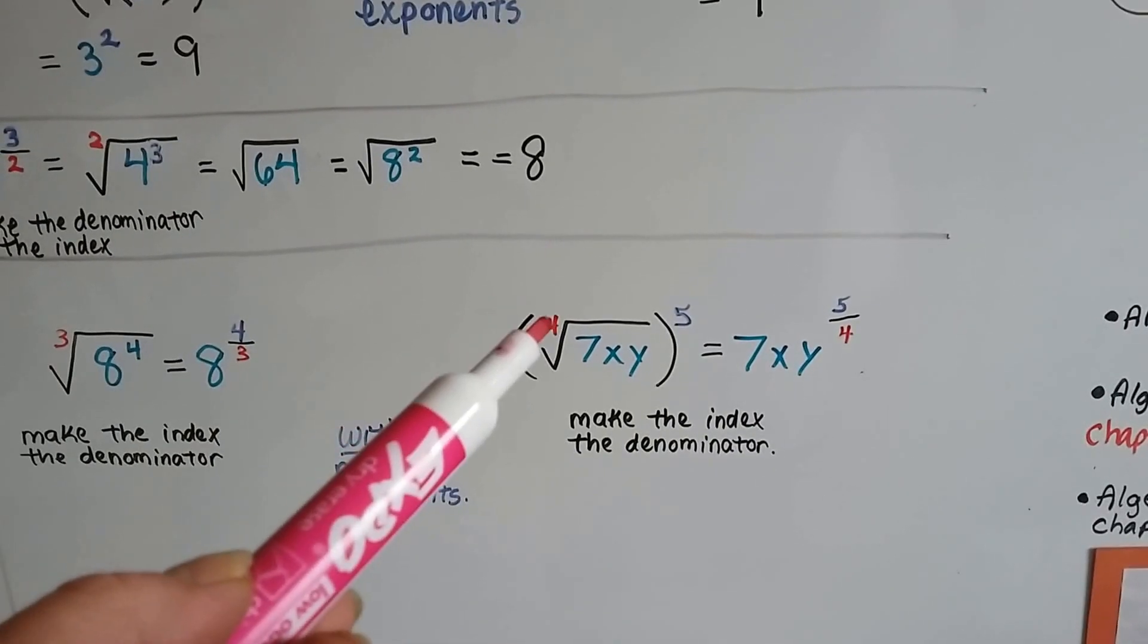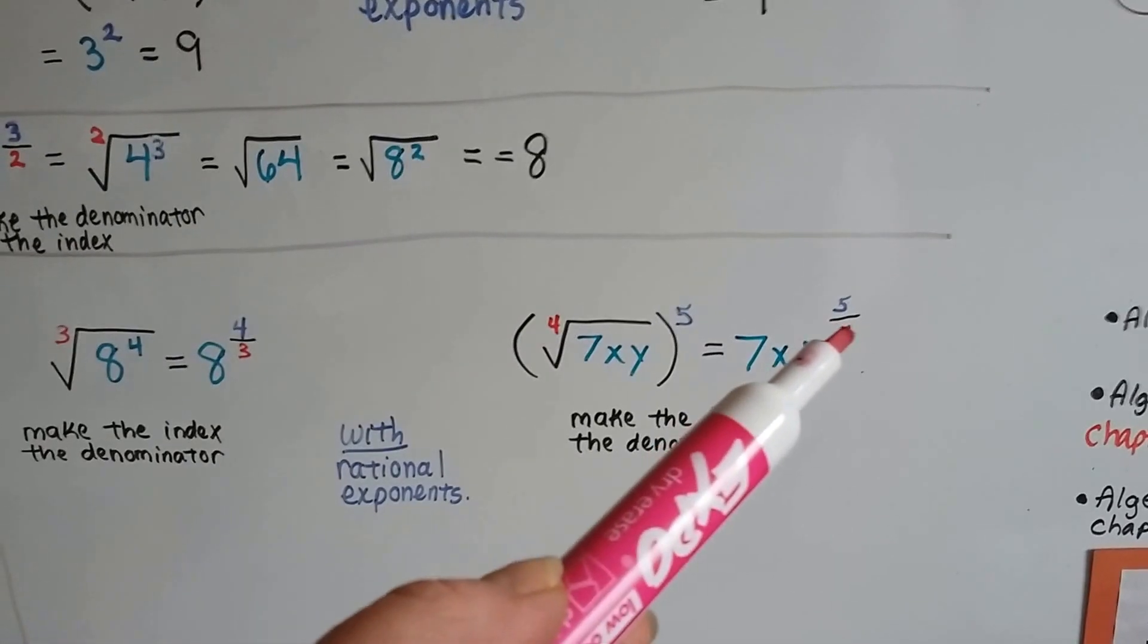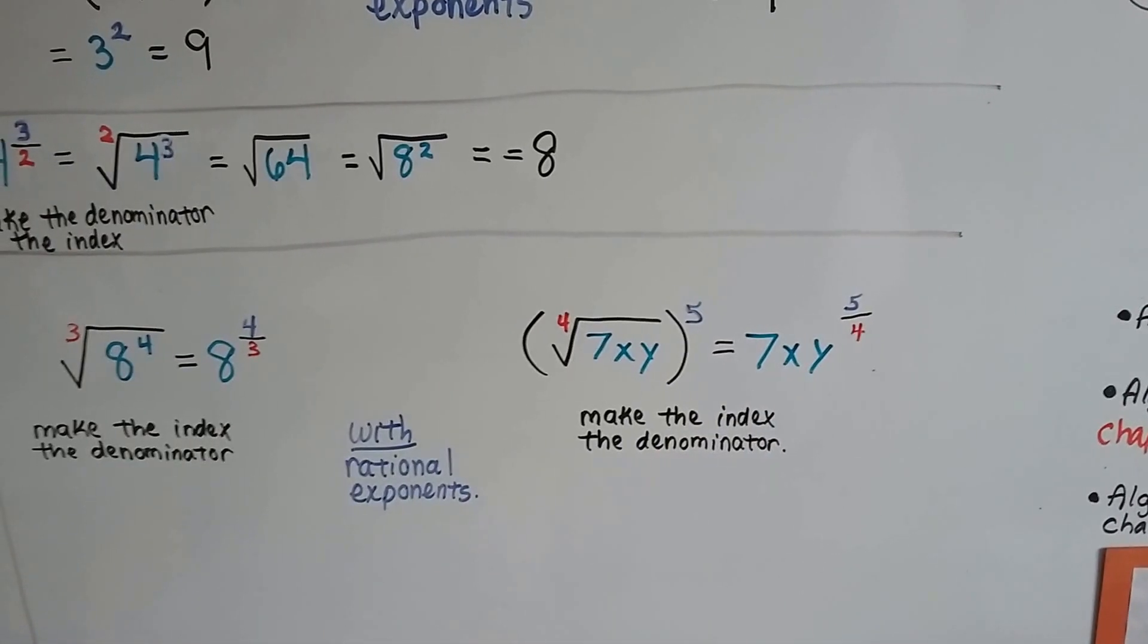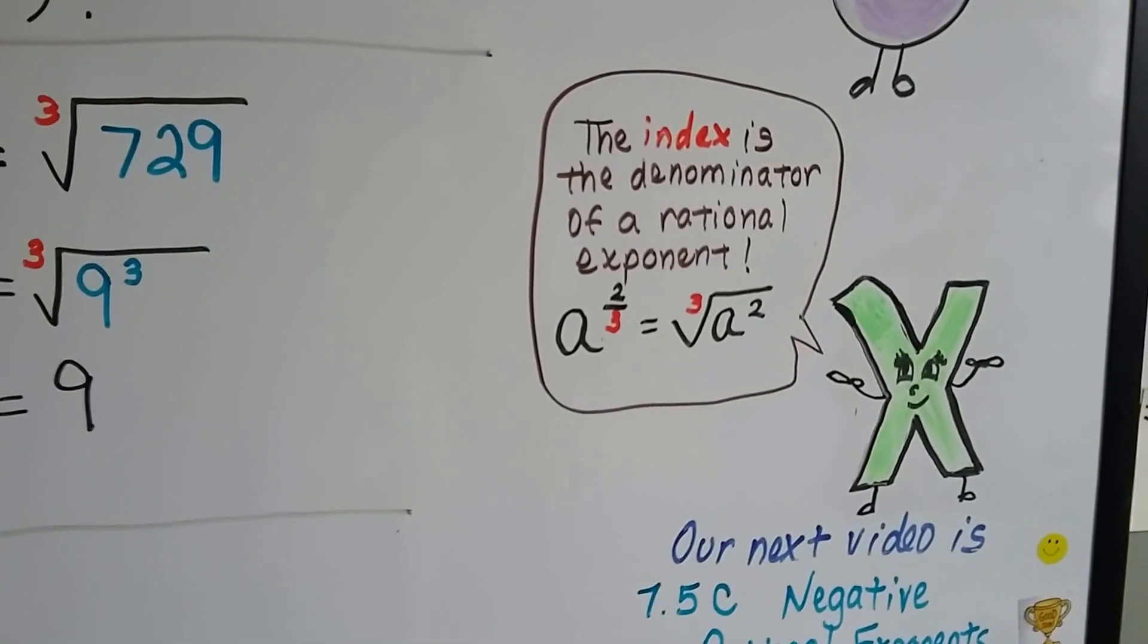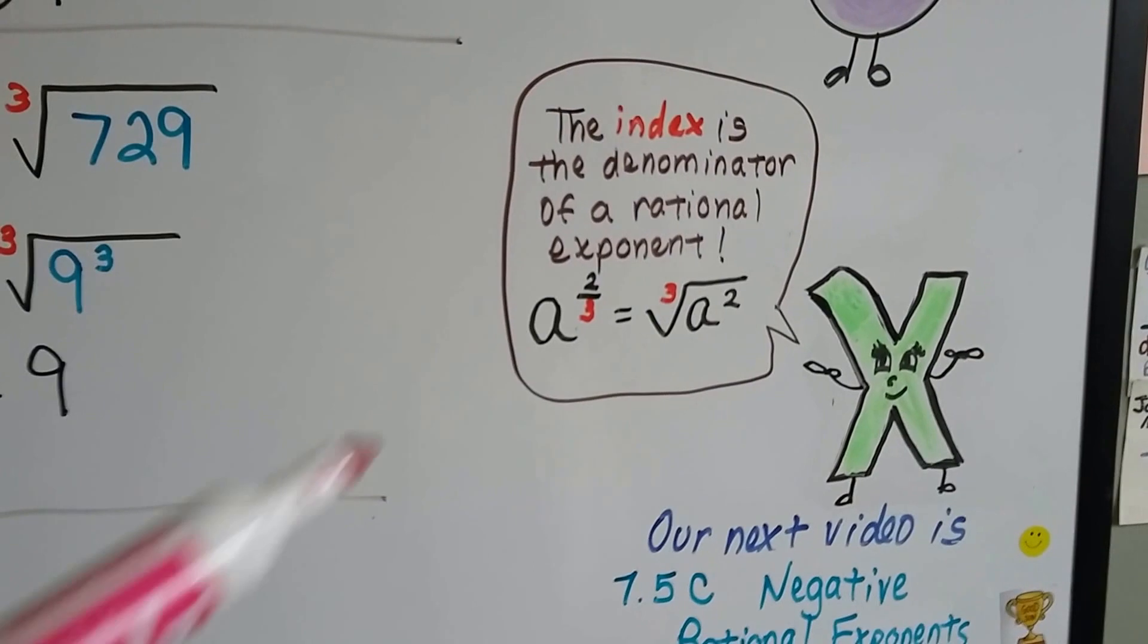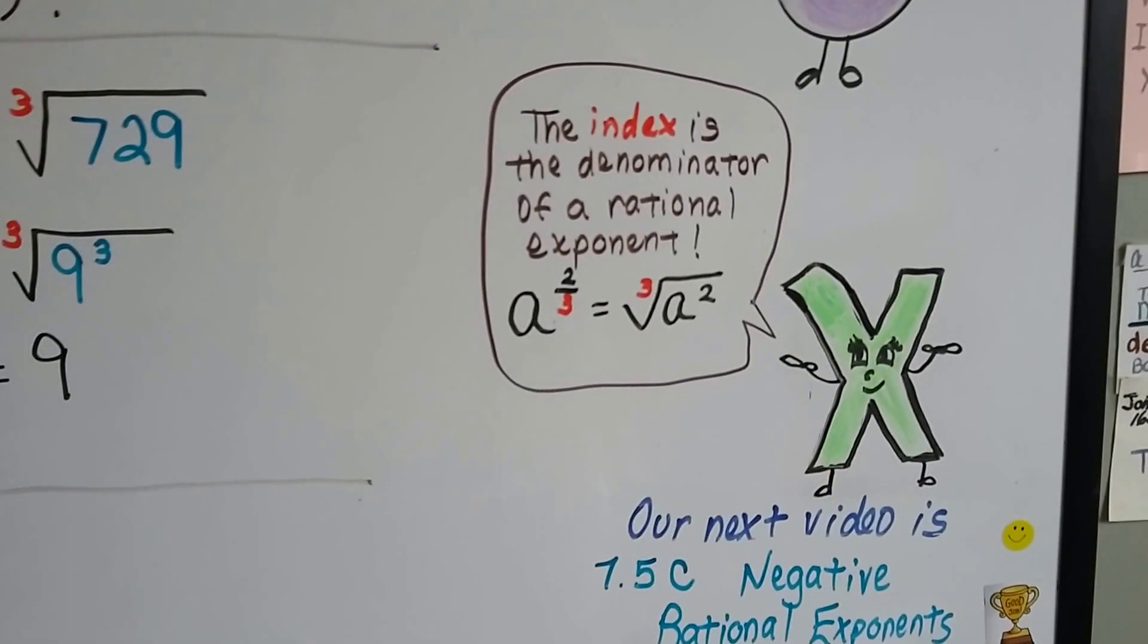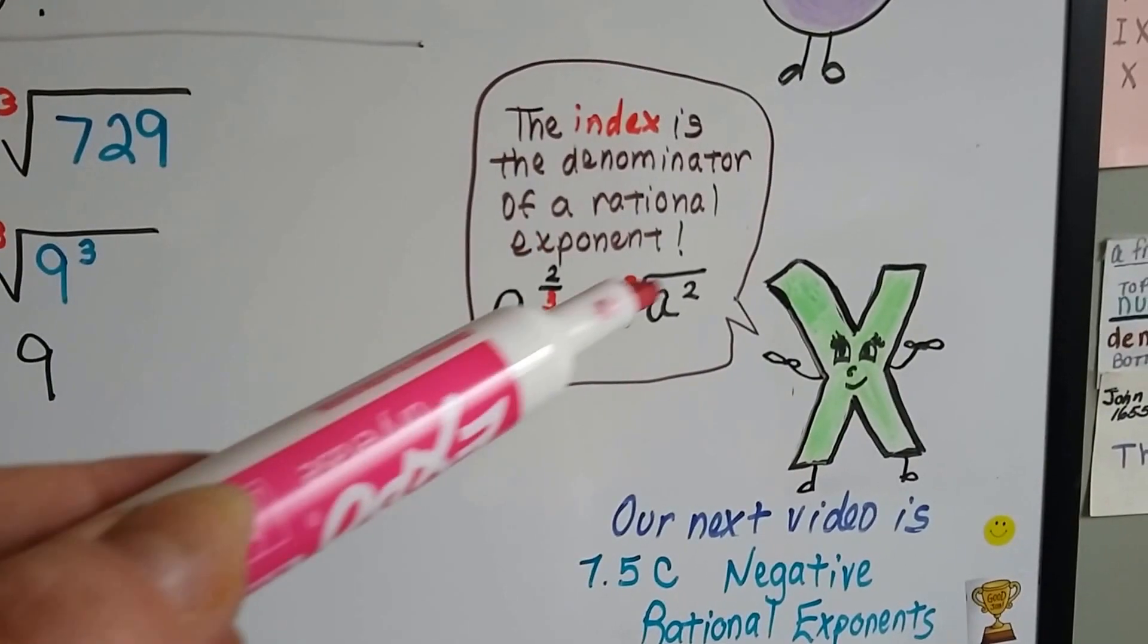So just remember that index, that root, is the denominator of our rational exponent. The index is the denominator of the rational exponent. And just move him over there, that's the numerator.